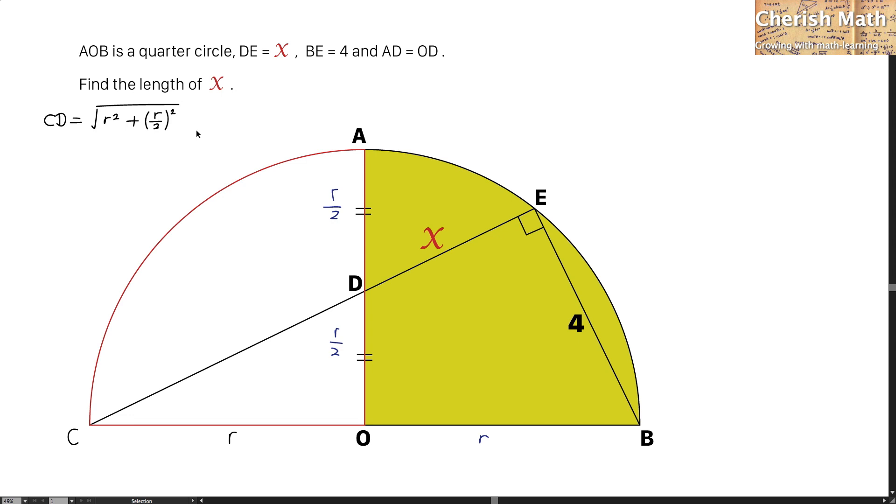This is the first equation. By expanding it, this is what I get. And the length of CD, when I simplify, I am going to get the square root of 5 divided by 2 times R.